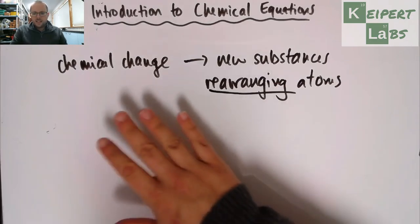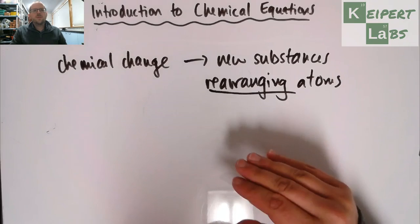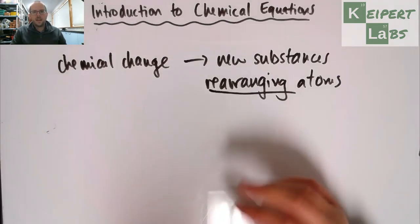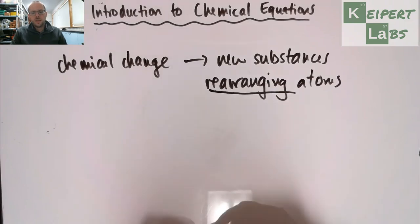But the reality is that we want a really simple shorthand way to be able to capture what that rearrangement looks like during chemical change. And so we use a chemical equation.